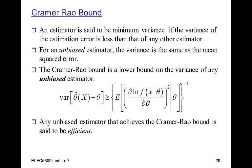The Cramér-Rao bound is a lower bound on the performance of an estimator. An estimator is said to be minimum variance if the variance of the estimator is less than that of any other estimator. That's especially desirable if the estimator is unbiased, because in that case the variance is the same as the mean squared error. Of course, we wouldn't want a minimum variance estimator that gave us a completely erroneous estimate. So the Cramér-Rao bound is a lower bound on the variance of any unbiased estimator.